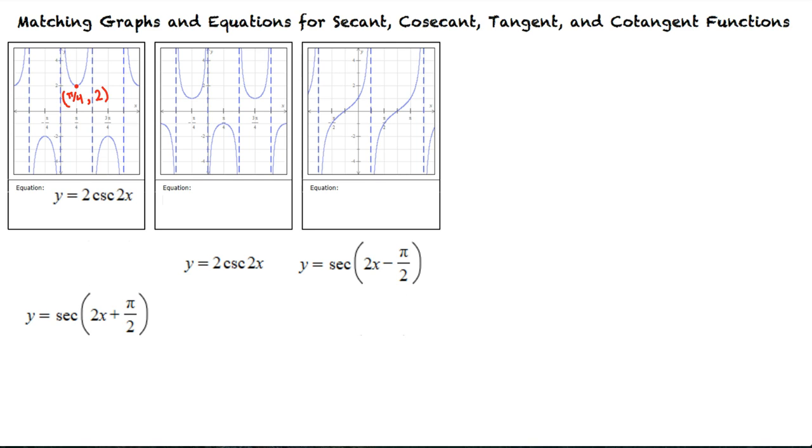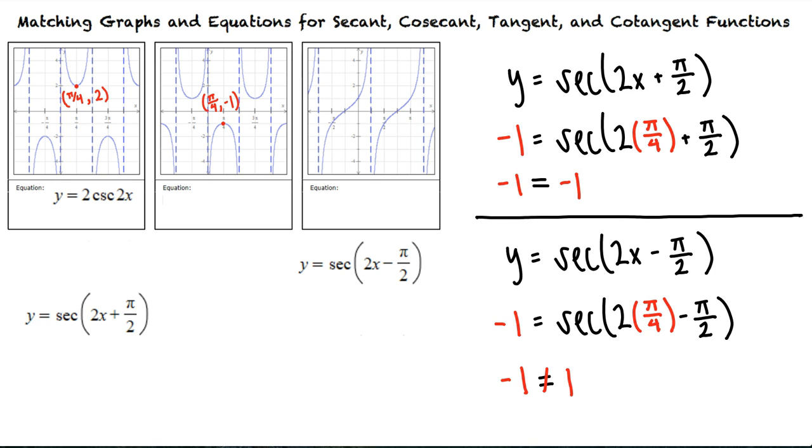Since we already determined that y = 2csc(2x) matches the graph on the left, we know this will not be the function that matches the graph in the middle. This graph contains the point π/4, -1. So we will follow the same steps as before to check which equation has this point as a solution. This point is only a solution for y = sec(2x + π/2), so this is the equation that matches this graph.